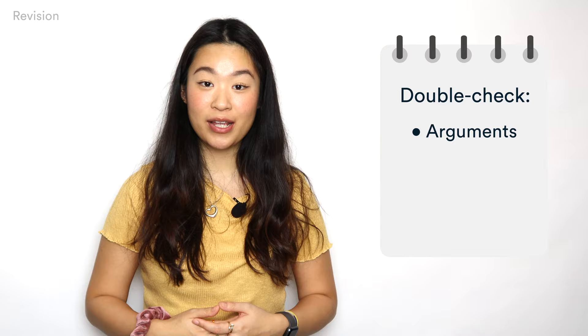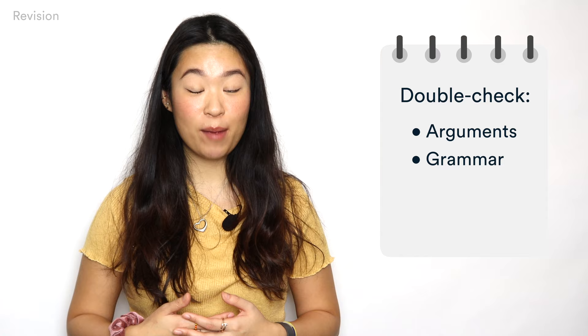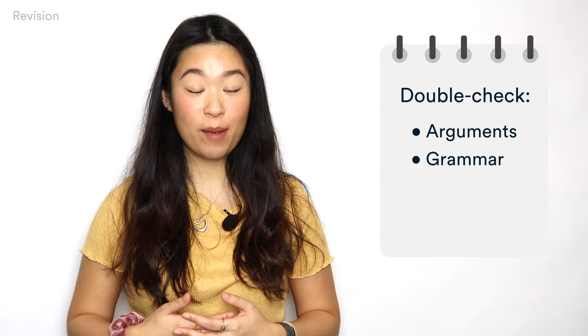After you're done writing, but before you submit your hard work, it's important to revise and polish your writing. Double-check your arguments — have you said everything you meant to say, or do some points need restructuring? Make sure to check your grammar, spelling, and formatting. And if you've cited sources in your paper, also use a plagiarism checker to make sure everything is good to go.